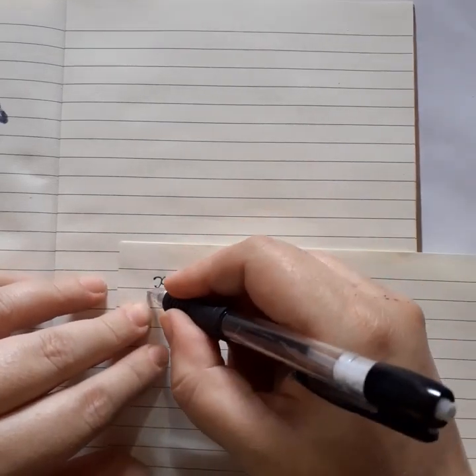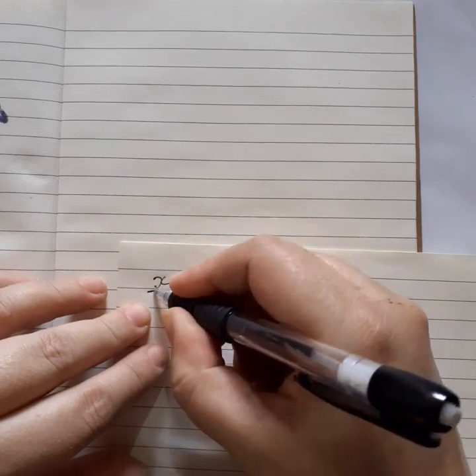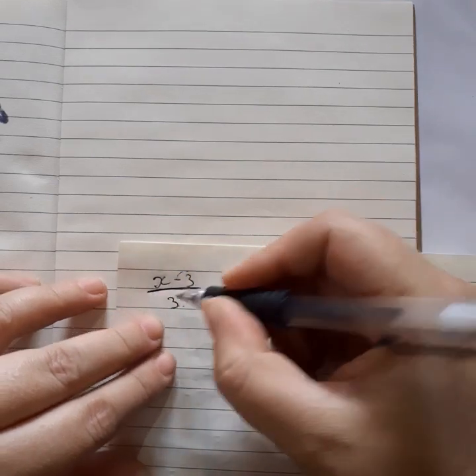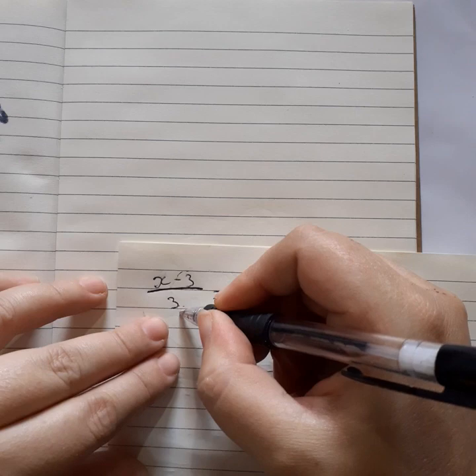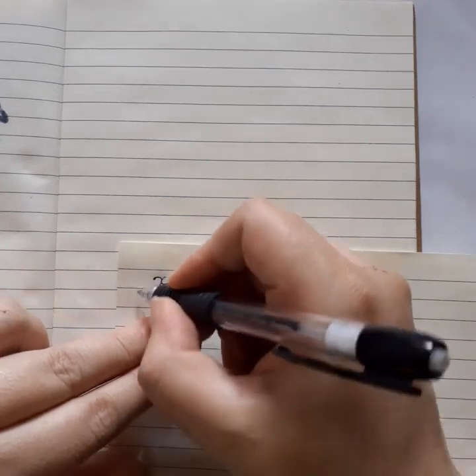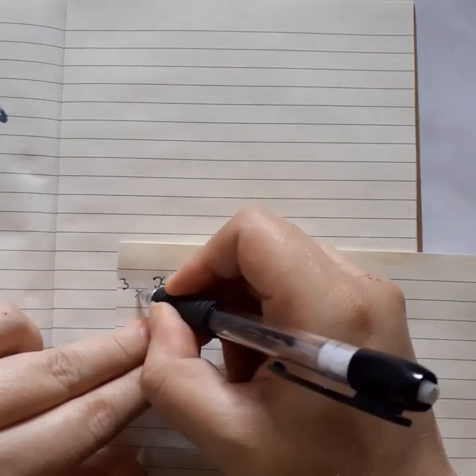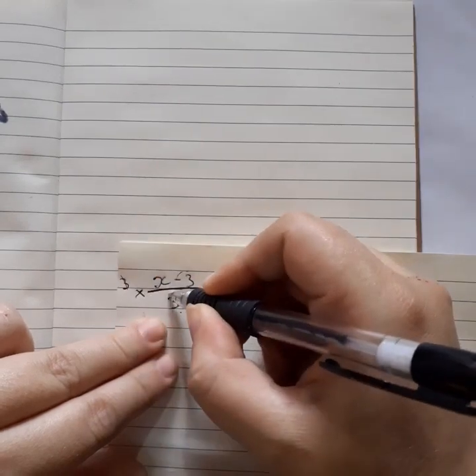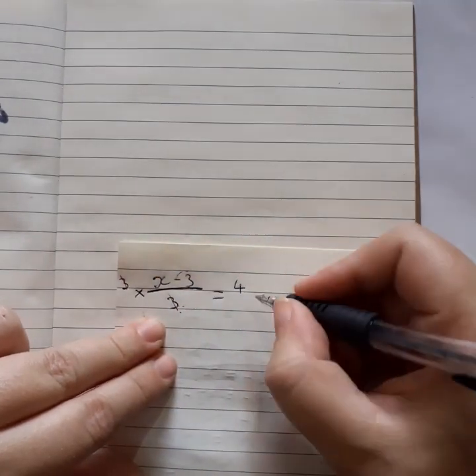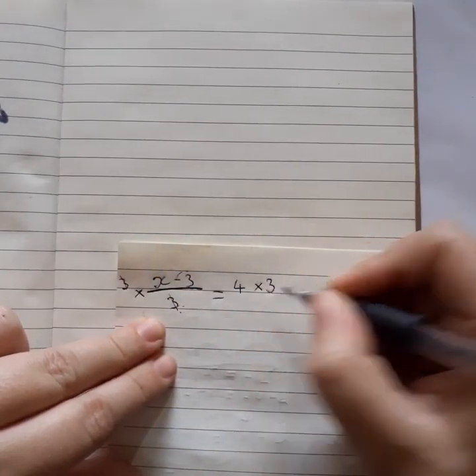So what we're going to do, this line means divide. So to get this 3 to be gone, we need to times by 3. So we always do the opposite. If we times it, that cancels out. And then we also cancel on the other side.